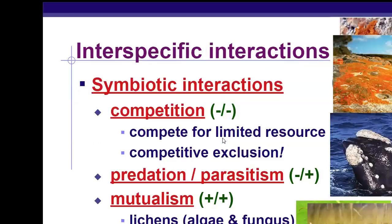You already talked about symbiotic relationships. Remember, competition is when both are negatively affected — they're competing for all kinds of different resources: food, water, habitat, mates. In predator-prey, the predator is benefiting and the prey is not. Also in parasitism, the parasite benefits and the host does not.